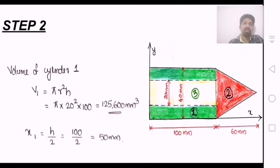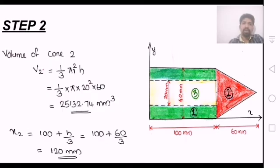For section 1, a length of 100 by 2 gives 50 mm. For section 2, the conical portion has volume 1 by 3 pi r square h. The radius is 20 mm (diameter 40 mm) and the height is 60 mm. The centroidal distance is 100 plus h by 3, which equals 120 mm.